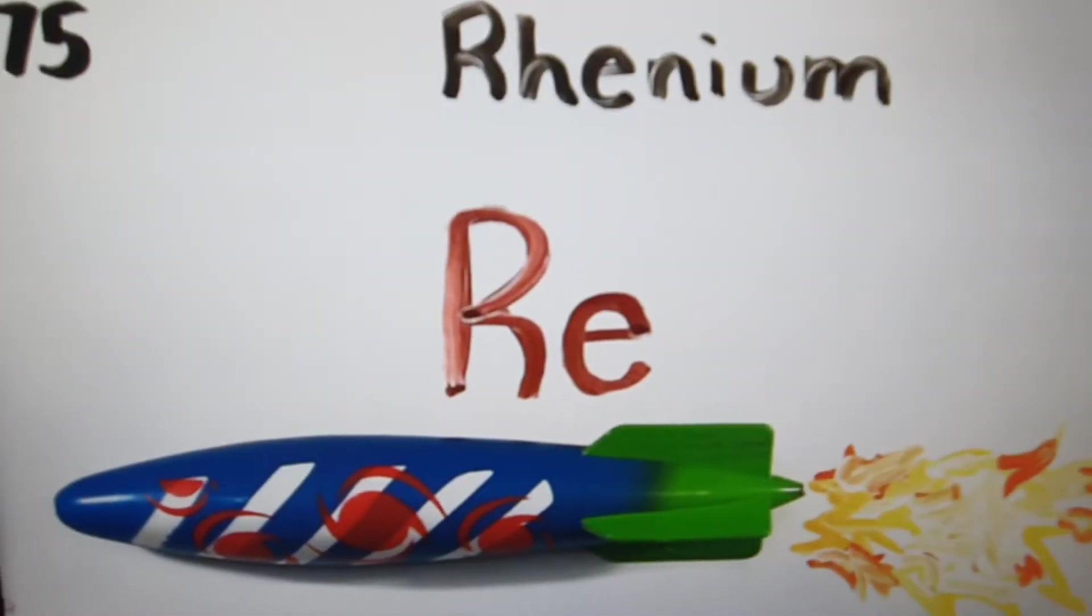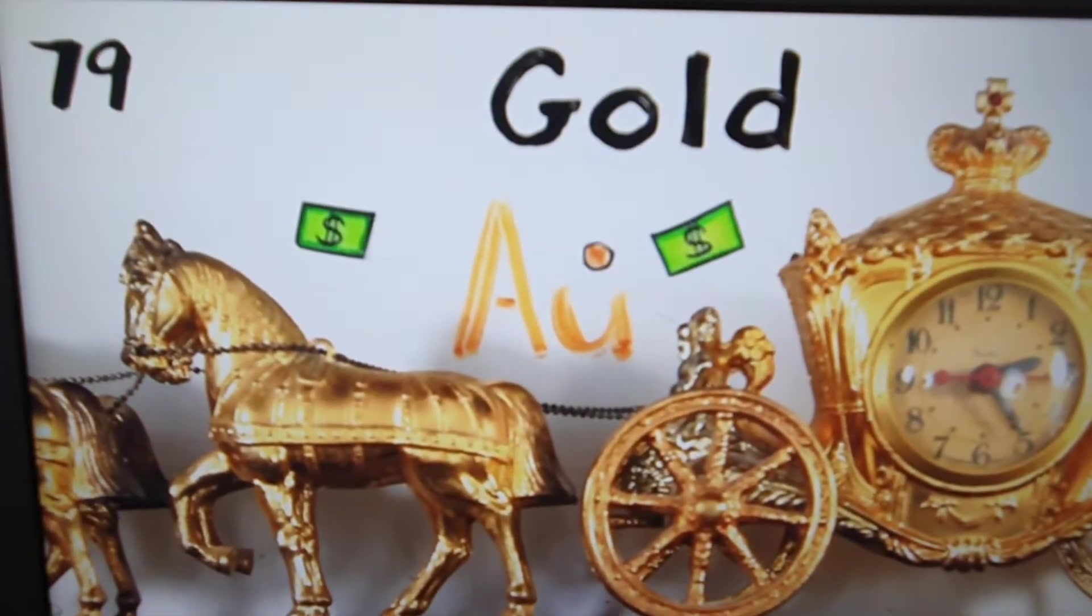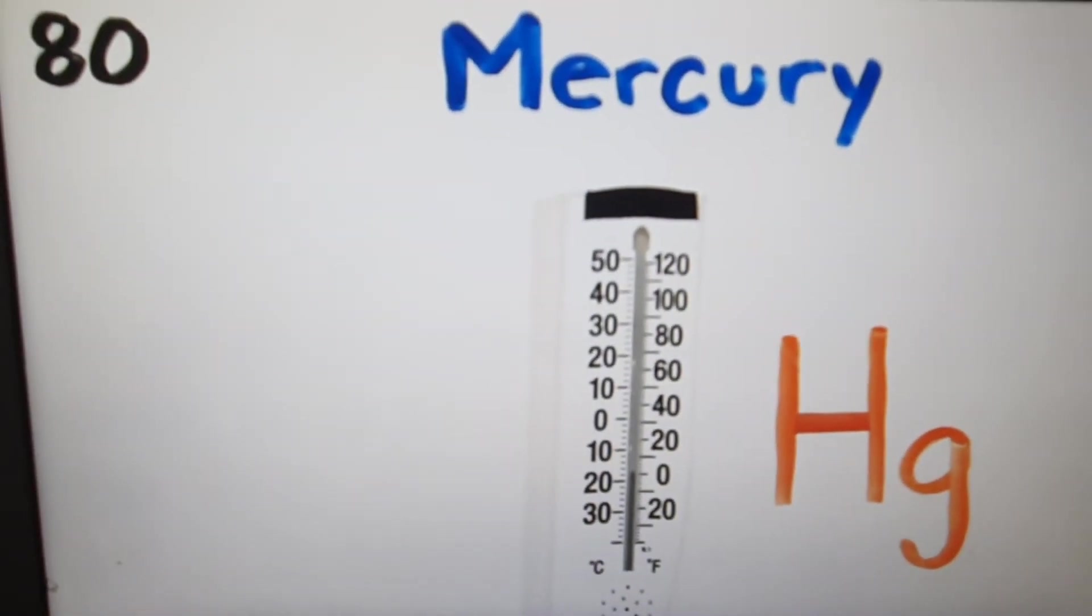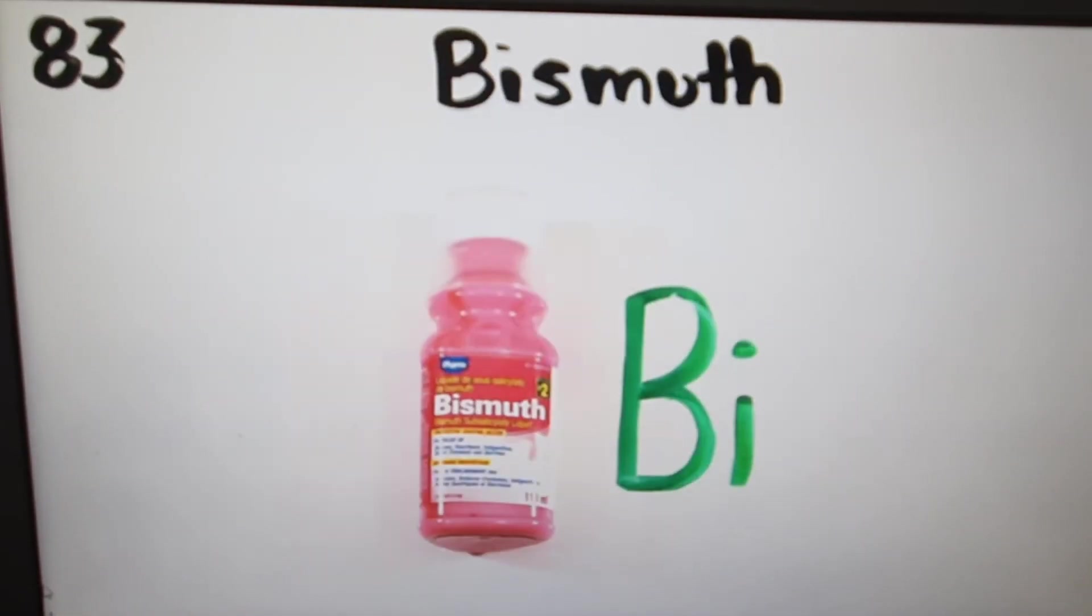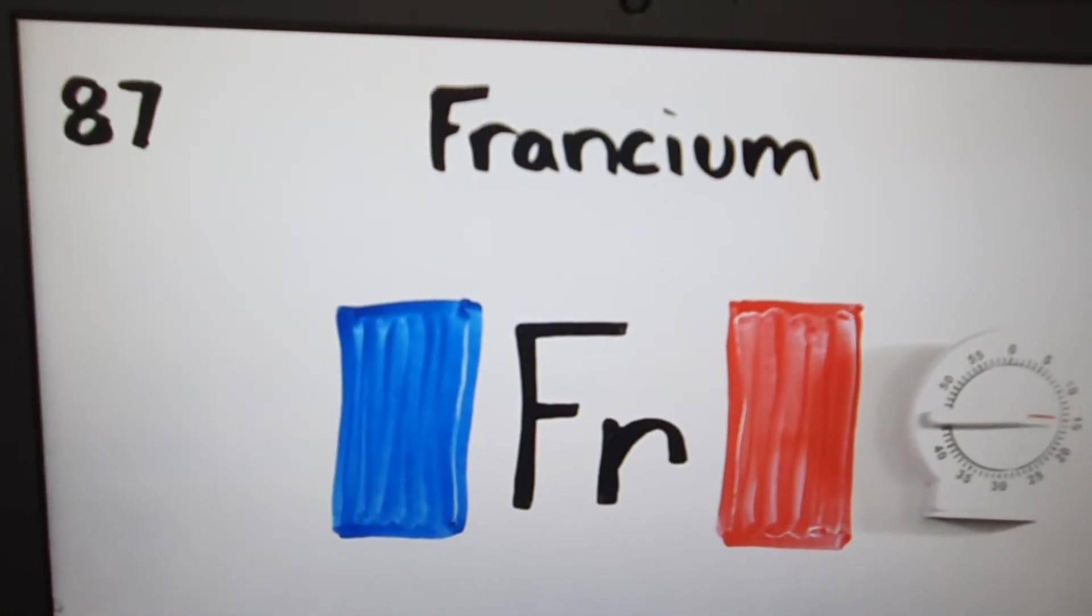Hafnium, tantalum, rhenium, osmium, iridium, platinum, gold, mercury, thallium, lead, bismuth, polonium, astatine, radon, francium.